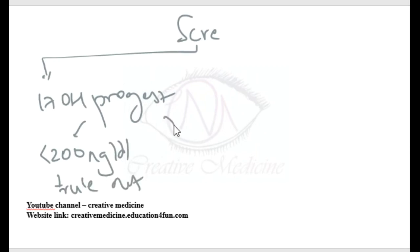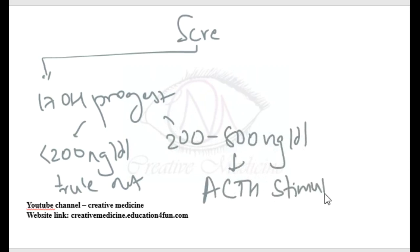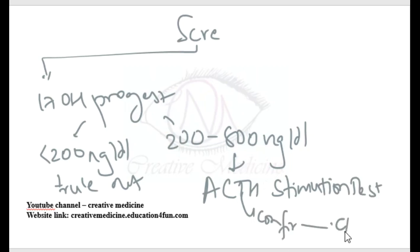If the screening test of 17-hydroxyprogesterone is found to be between 200 to 800 ng per deciliter, then you should do the adrenocorticotropic stimulation test. This adrenocorticotropic stimulation test is the confirmatory test for congenital adrenal hyperplasia.